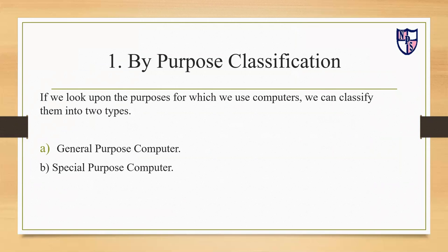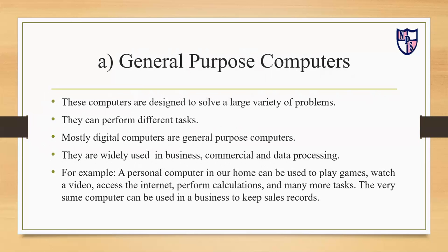By purpose classification: if we look at the purposes for which we use computers, we can classify them into two types. Number one: general purpose computers, and number two: special purpose computers. General purpose computers are designed to solve a large variety of problems. They can perform different tasks. Mostly digital computers are general purpose computers, widely used in business, commercial, and data processing.